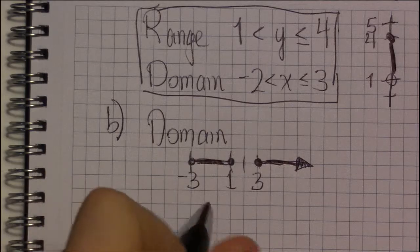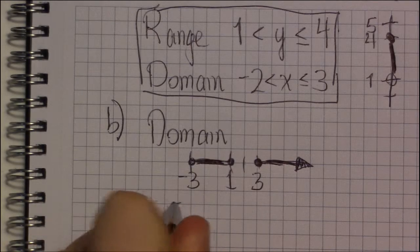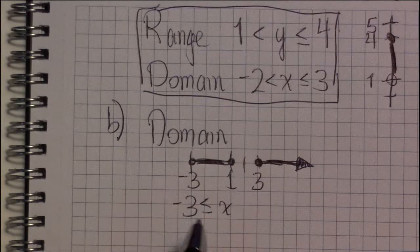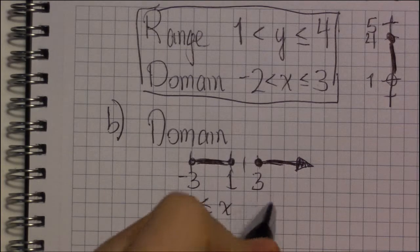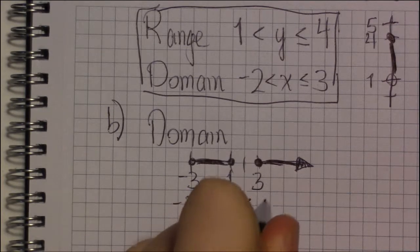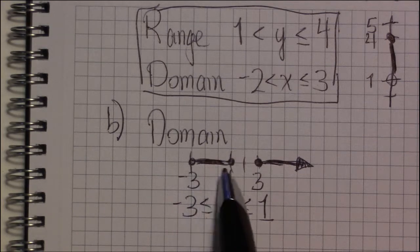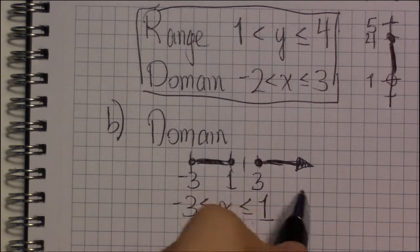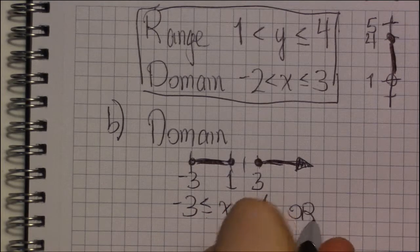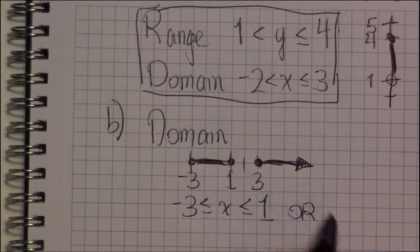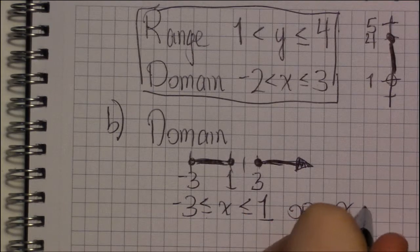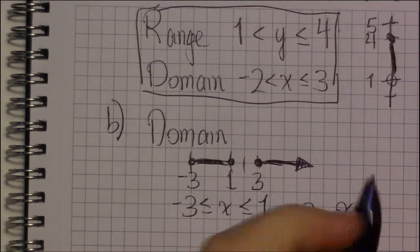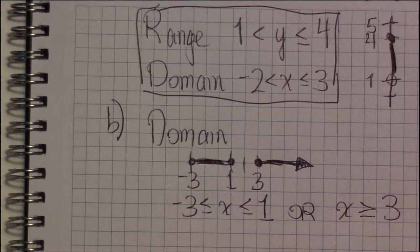So, this would be written as that minus 3 is less than or equal to x is less than or equal to 1. You can find the graph covering these x values, or the graph covers these x values, the x values that are greater than or equal to 3.